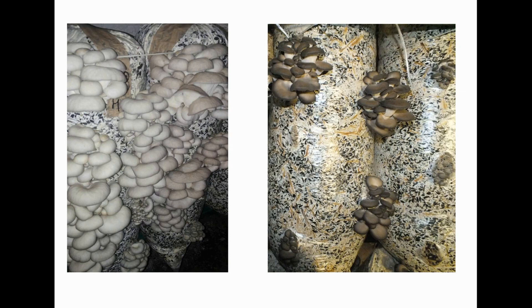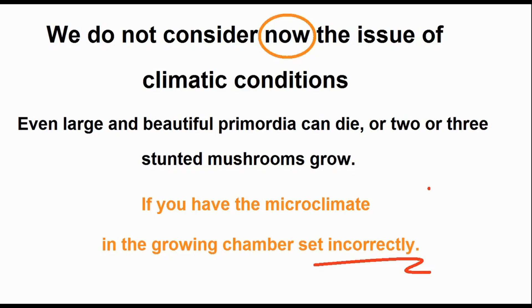The yield depends only on how many fruiting bodies the mycelium that has occupied the substrate can feed. The oyster mushroom feeds on the substrate, and not on the mycelium. If the substrate is balanced in terms of nutrients and the oyster mushroom has enough of all the nutrients, the yield will be good, even if you put 2.5% and not 3 or 4% of the spawn.